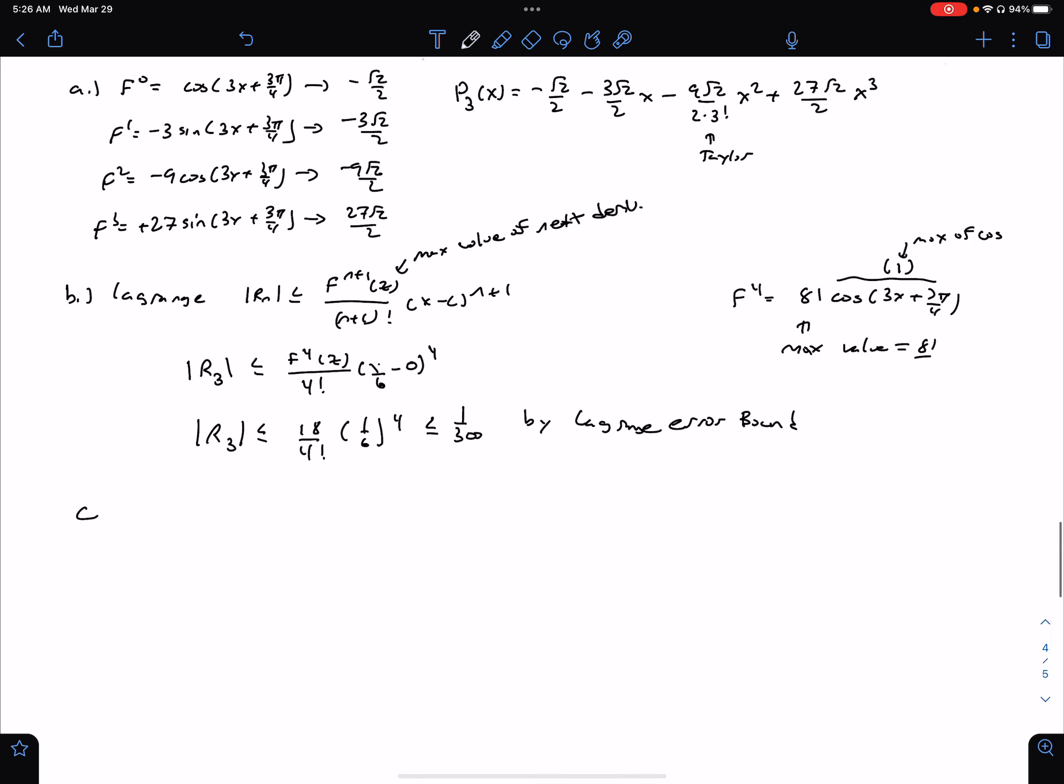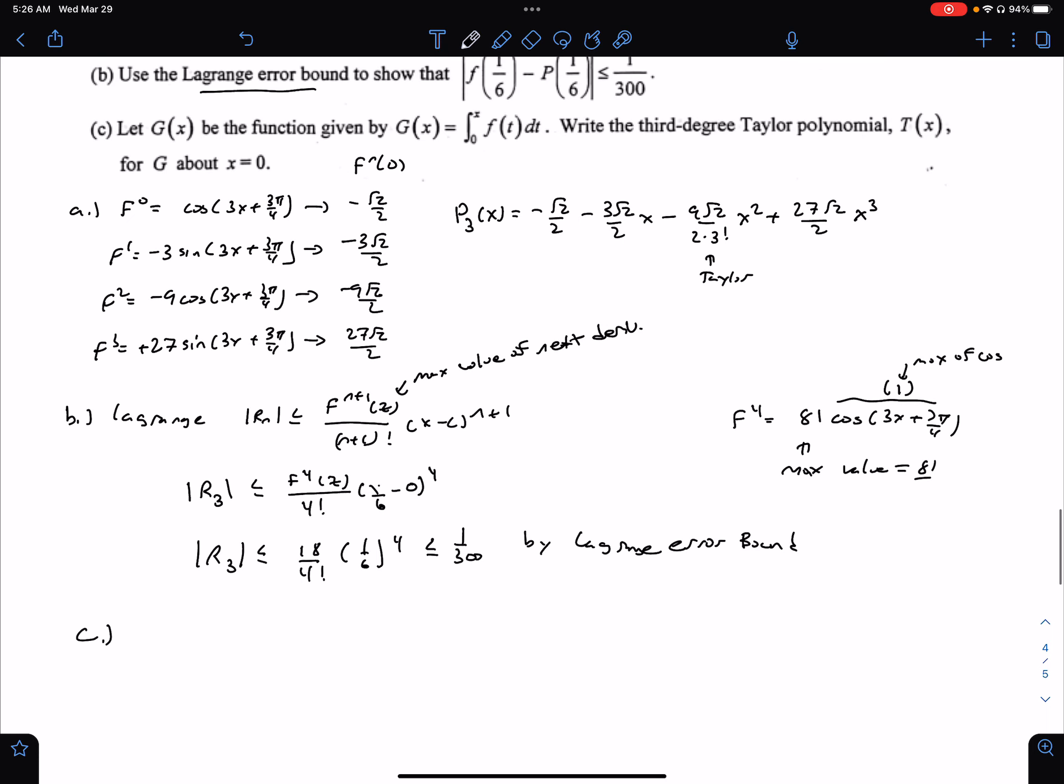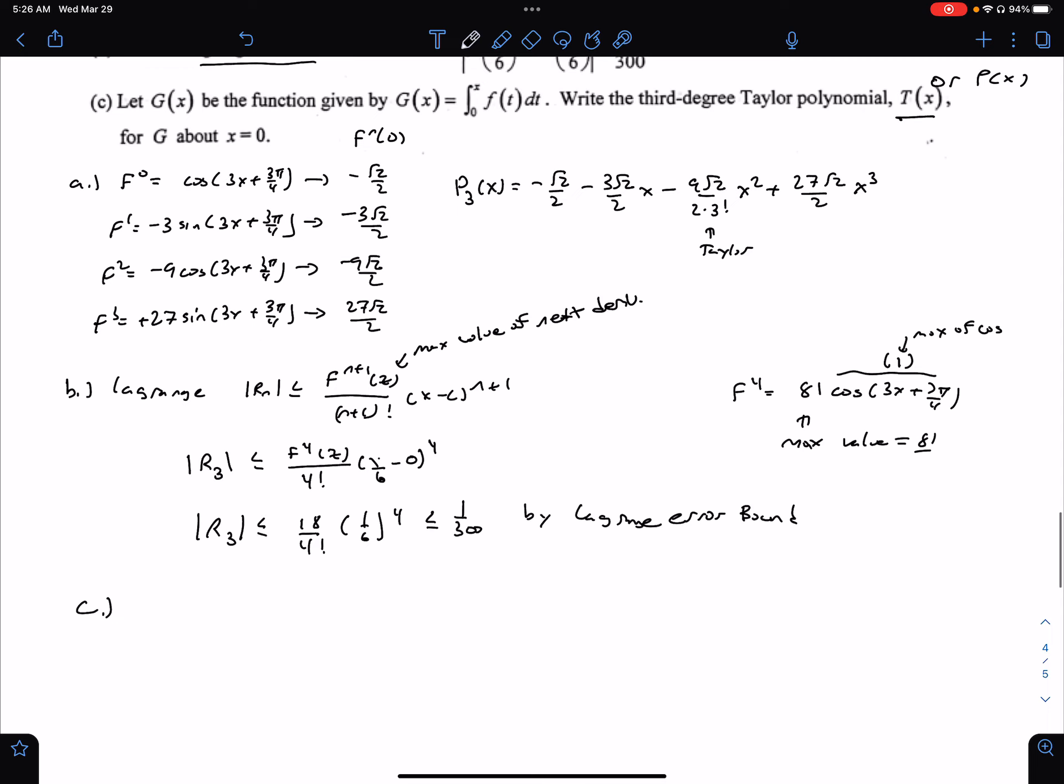All right, next one, part C. So part C now says, let G(x) be defined by the integral of f. Write the third-degree Taylor polynomial. Now notice here, they use the letter T for T. Sometimes you use T or they'll use P(x) for the polynomial. Either one's fine. About x equals 0. So now we just want to take the integral of it.